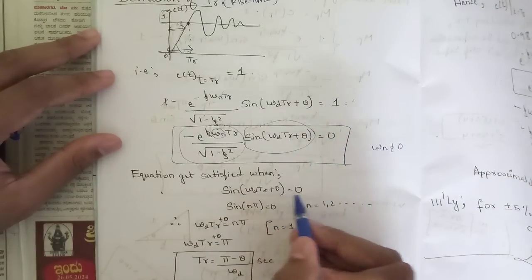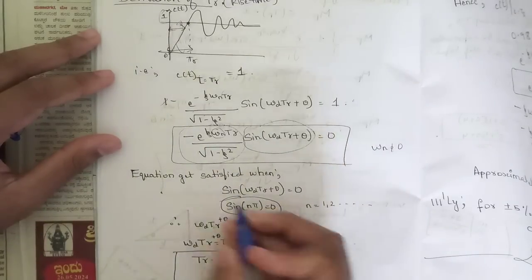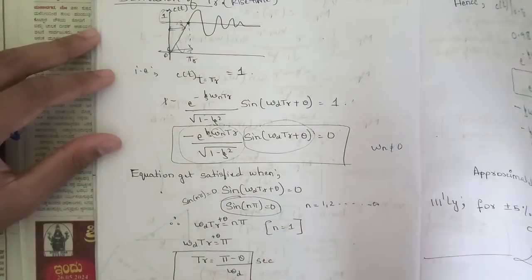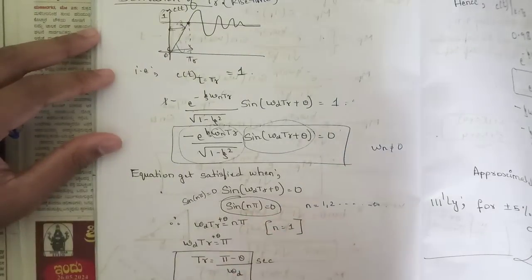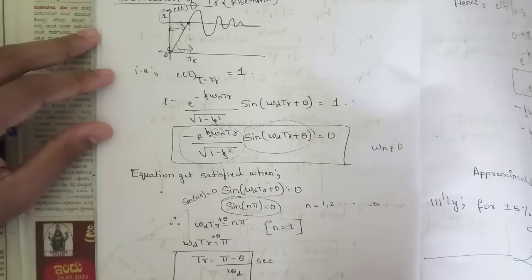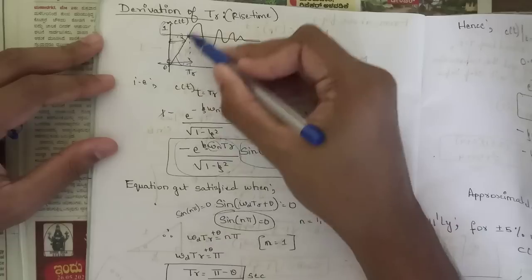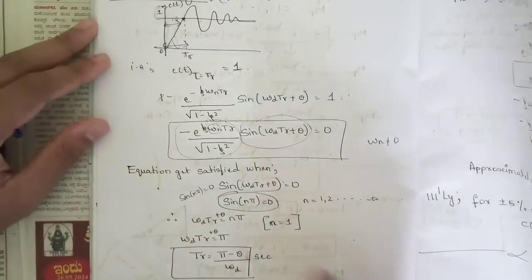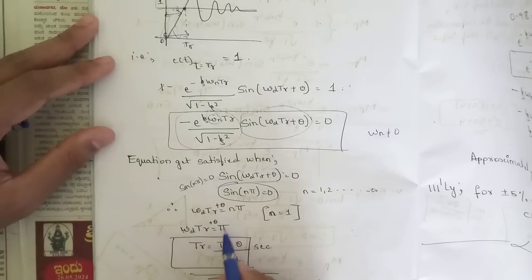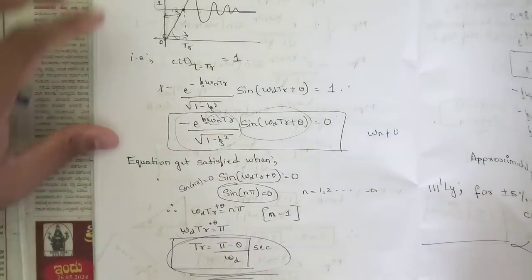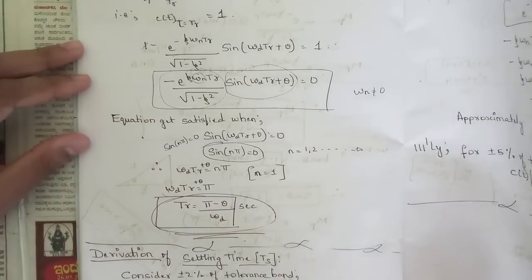Since sin(ωd·tr + θ) = 0, we use the trigonometric identity sin(nπ) = 0 for n = 1, 2, 3... So ωd·tr + θ = nπ. Taking n=1 for the first overshoot response: ωd·tr + θ = π. Therefore, tr = (π − θ) / ωd. This is the expression for rise time.